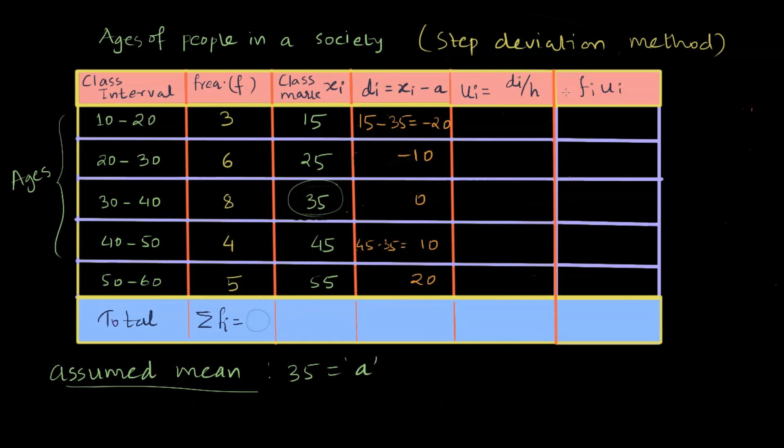Now in step deviation method, I want to find out the division di by h, and h is nothing but the range or the class size. So how big is each class is what I am interested in. And h in this case is 10 because 20 minus 10 or 30 minus 20 or 40 minus 30 is all 10.